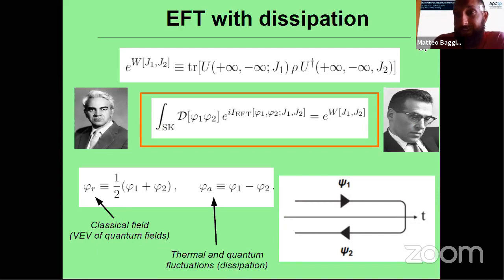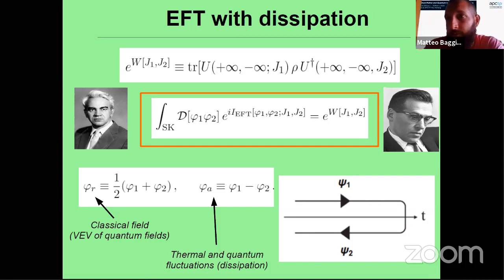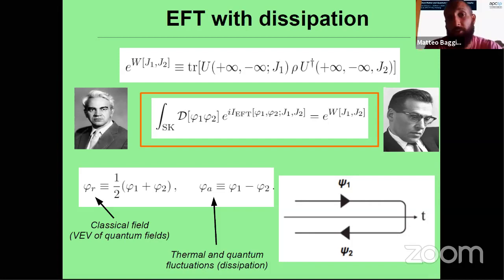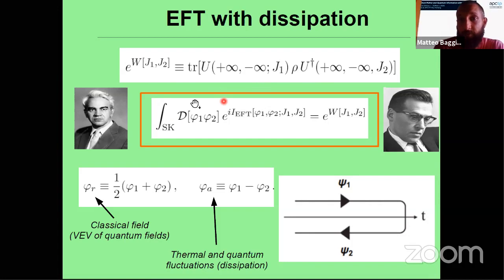The way to do field theory with dissipation was given to us by Keldysh and Schwinger. The approach is the Schwinger-Keldysh path integral: you double the degrees of freedom and write the theory in terms of two fields. One field is associated to a source j₁ going forward in time, and the other to a source j₂† going backward in time. This is a huge mathematical formalism with conditions from unitarity, causality, etc., but the key physical point is that doubling the degrees of freedom is analogous to coupling your system to a thermal bath.